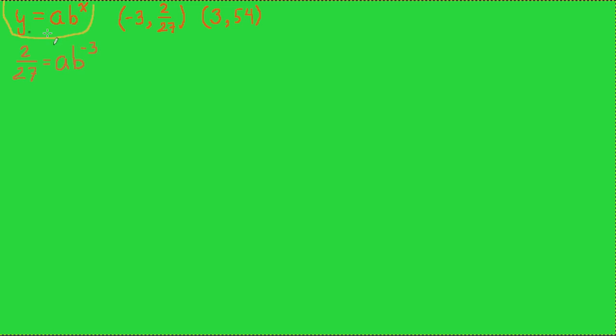Similarly, if this function goes through this point then 54, the y value of this point, is equal to a times b to the third power, the x value of this point. So now we've got two equations and two unknowns.